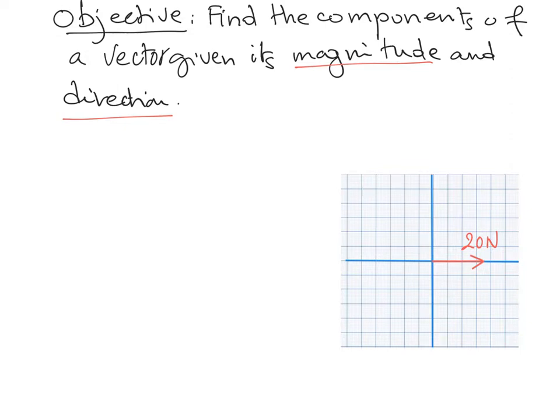The objective is to find the components of a vector given its magnitude and direction in physics and engineering problems. A vector can be a field, a force, a velocity, and so on.